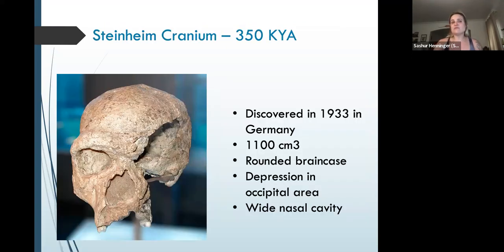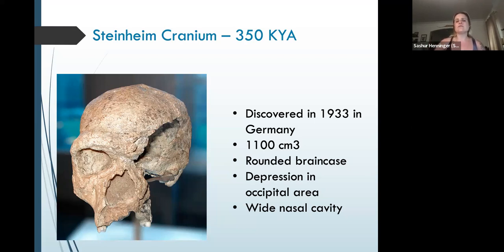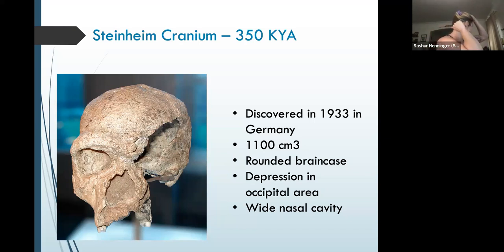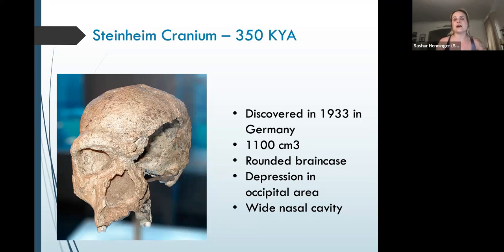One last example, and this one's very important. This is the Steinheim cranium — about 350,000 years old, found in Germany, with a brain volume of 1,100 cubic centimeters. So a smaller brain size on average, but an interesting example that appears to be already along the line of Homo neanderthalensis, with a significantly rounded brain case. This wide nasal cavity is going to be a distinctive trait of Homo neanderthalensis later, as well as a depression in the occipital area — the rear of the skull. When we get to Neanderthals, you'll see they have a depression you can kind of press your thumb into at the base of their skull in the back, which is a distinctive trait for them. So the Steinheim cranium shows that perhaps 350,000 years ago, we already have individual archaic members of the Homo genus starting to collect these Neanderthal-like traits.